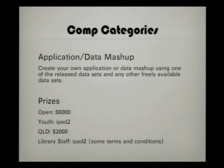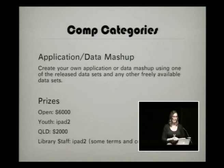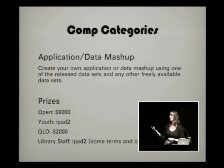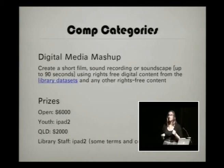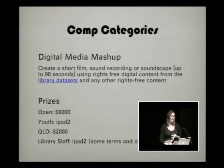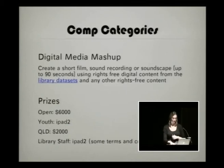The next category is called application slash data mashup. This is the area I'll be showing most of my examples in today, as it's the area I've had most interest in. It's all about creating your own application, an interactive work, or a data mashup. You have to use at least one of the released data sets from the State Library or from any of the libraries nationally or in New Zealand, and you can also mash that up with any other freely available data sets. The prizes are pretty much the same for that category. The final category is the digital media mashup — a short film, a sound recording, or a soundscape of up to 90 seconds. You can use the rights-free digital content from the library data set, including photos, scores you can translate into MIDI files to mix up music, and other information about convicts, maps, and more.